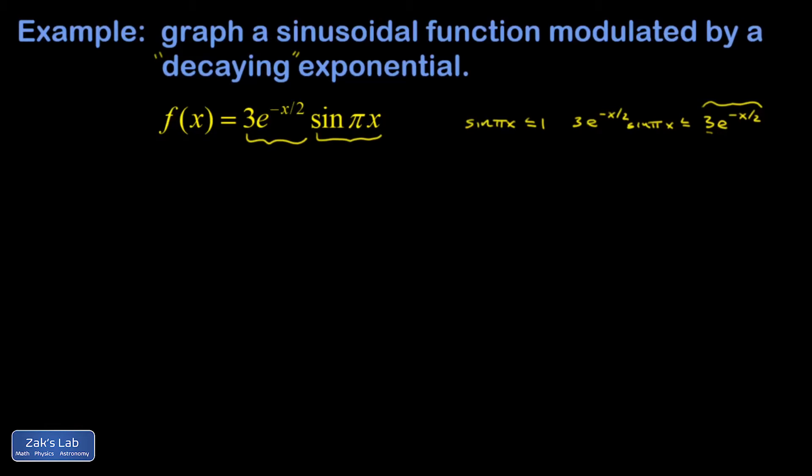Then I can look at the lower bound. So the sine of pi x is always bigger than negative 1, and that means my original function f of x has got to be bigger than what I get if I replace sine pi x with negative 1. So bigger than negative 3e to the negative x over 2. And the moments where my curve actually touches this graph, negative 3e to the negative x over 2, is when the sine of pi x is equal to negative 1.